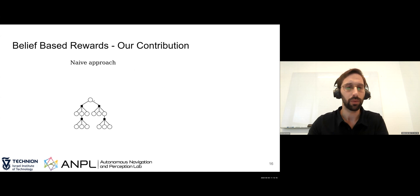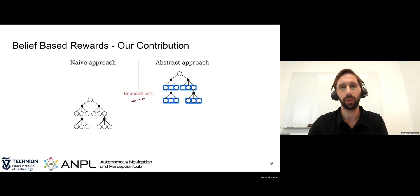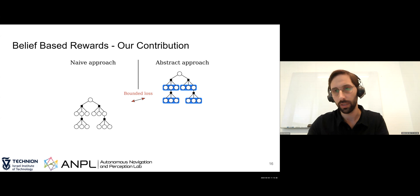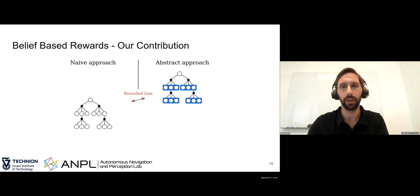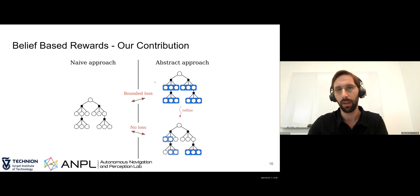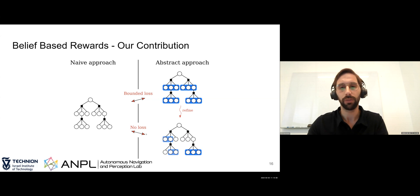The naive approach would compute the reward value at every belief node. Instead, we suggest an abstract approach where we take a cluster of posterior nodes and compute only a single reward value per cluster. In this specific example, instead of computing the reward for each belief independently, we cluster three posterior nodes and calculate the reward once. We will show that we can bound the loss between the naive approach and the abstract approach. We can further refine this abstraction to still achieve computational efficiency with no loss in the output policy between the naive and the abstract approach.